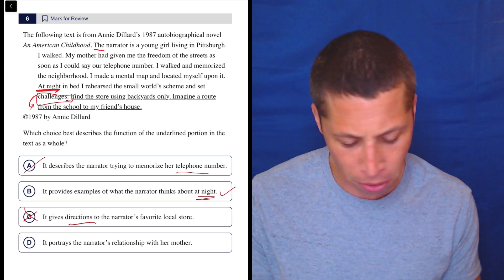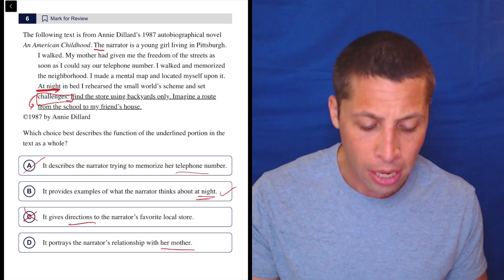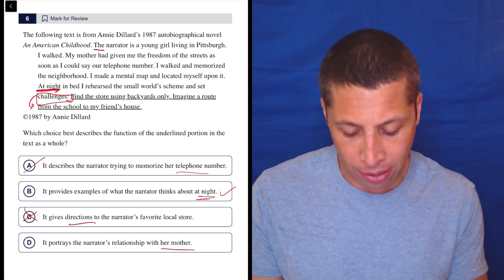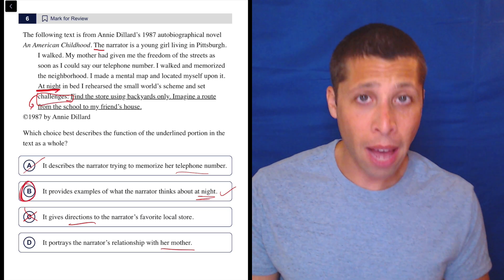Choice D: It portrays the narrator's relationship with her mother. No, they talked about the mother earlier, but it's not about that. It's much more about the challenges and they specifically say things that she thinks about at night. So yeah, there we go.